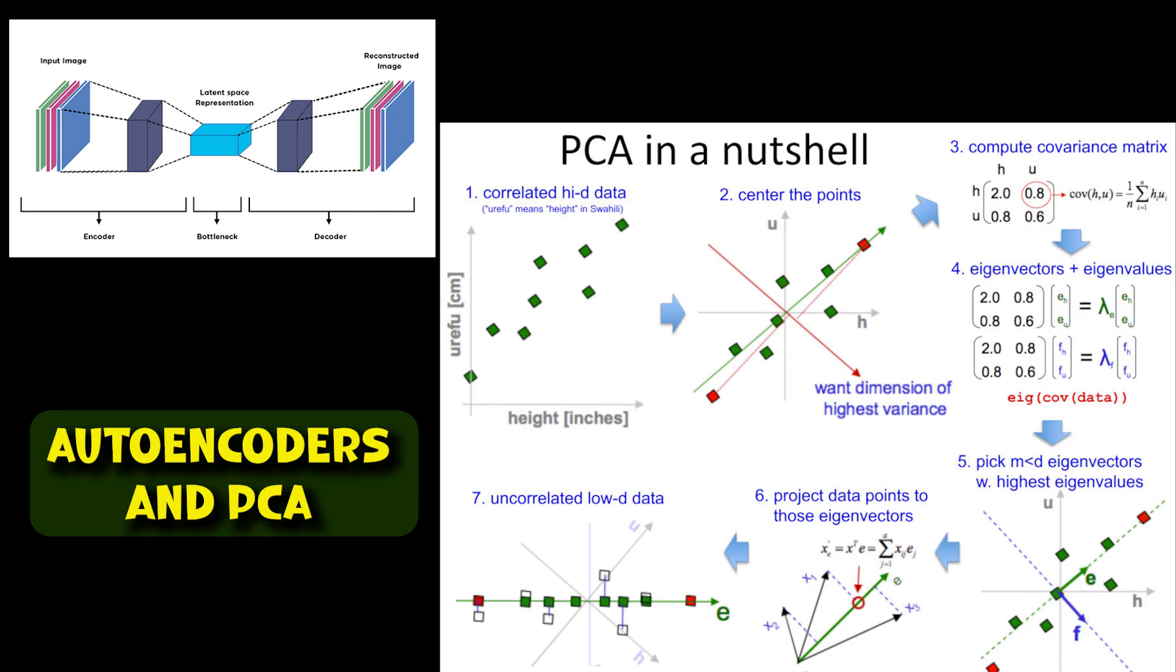Example: suppose you have a dataset of wine samples with 13 chemical properties. You want to reduce the dimensionality for visualization or further analysis. You can use PCA to identify the principal components that explain the most variance in the dataset. The first two or three principal components might capture, say, 90% of the variance. By projecting the data onto these components, you can reduce the dimensionality while still retaining most of the information in the dataset.